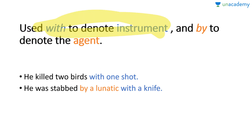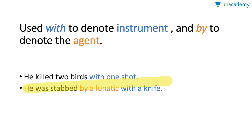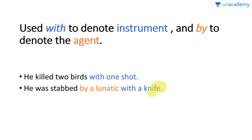'With' is used to denote an instrument, and 'by' is used to denote an agent. Example: he killed two birds with one shot — one bullet, so we use 'with'. He was stabbed by a lunatic with a knife. Here, 'by a lunatic' — because the lunatic is the doer, the agent. 'With a knife' — because the knife is the instrument. So now it is clear when to use 'with' and when to use 'by'.